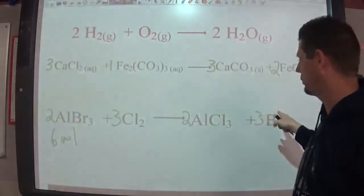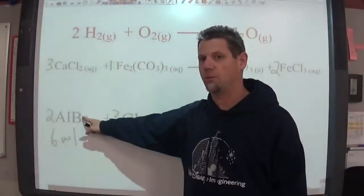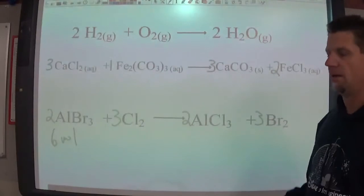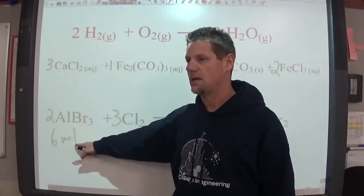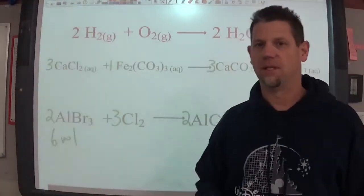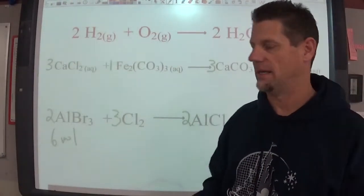This is a two to three ratio. Two aluminum bromides will make three bromines. So if I start with six how many of these can I make? This is where we get back into our dimensional analysis idea again.